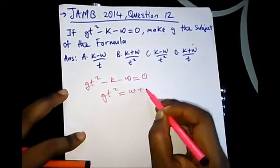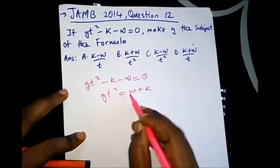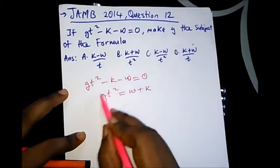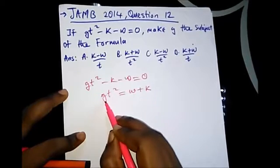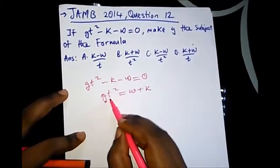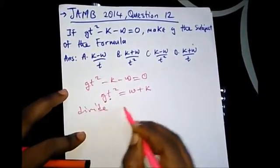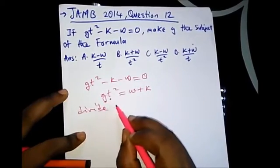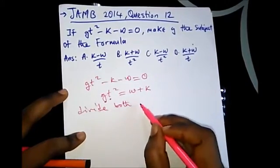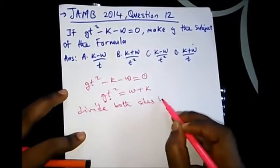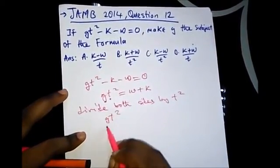So we have gt² = w + k. When we have an operation binding the variable we want to make the subject of the formula, we divide both sides by that factor to cancel it out. So we divide both sides by t². Remember, in JAMB you have to be as fast as possible — you have about 50 seconds per question. But this is a tutorial video, so we explain for you to understand.